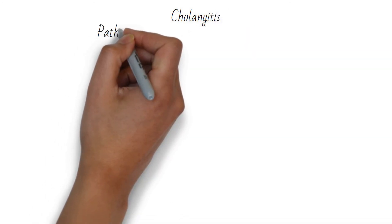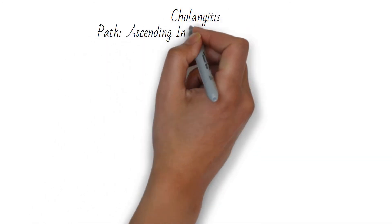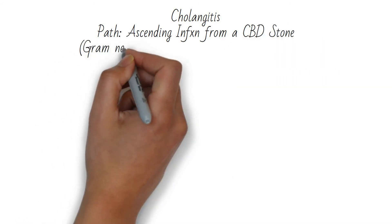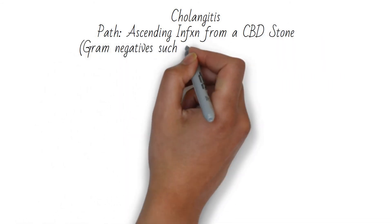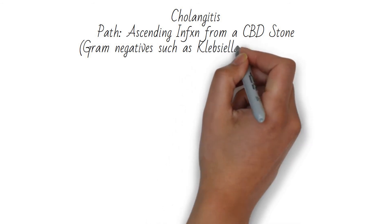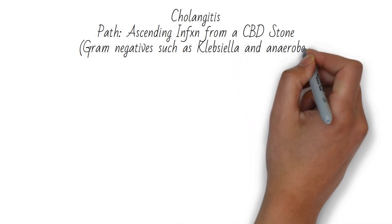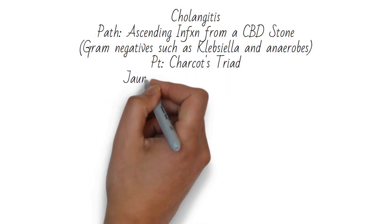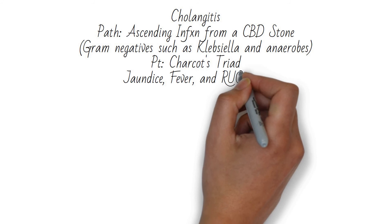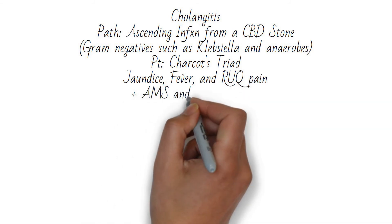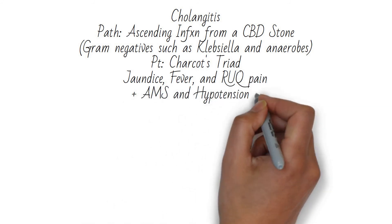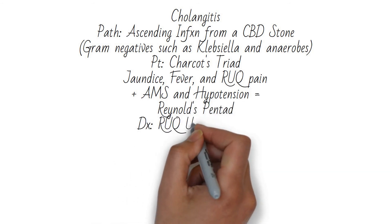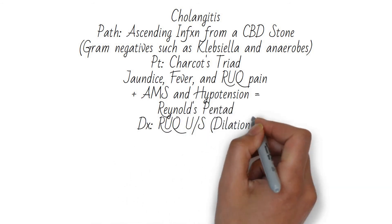Cholangitis, also known as ascending cholangitis, is an ascending infection due to obstruction from a common bile duct stone. The most common bug is E. coli, but this is usually a gram-negative bacteria including E. coli or Klebsiella, or an anaerobe. The patient will present with Charcot's triad of fever, right upper quadrant pain, and jaundice. They will look very sick. If they begin to progress to sepsis, they will have Charcot's triad plus altered mental status and hypotension, which is called Reynolds Pentad.